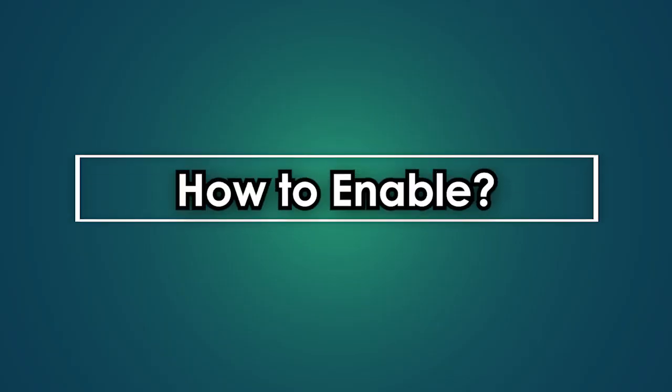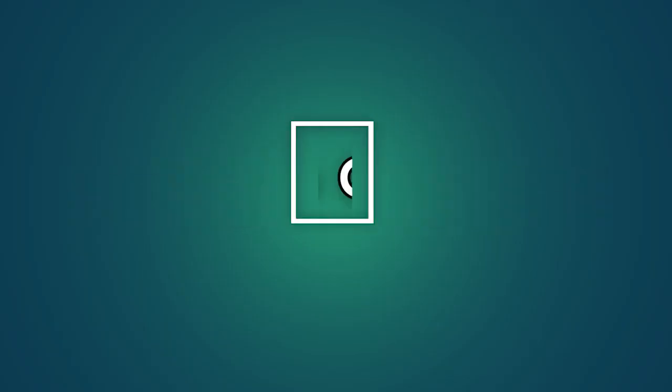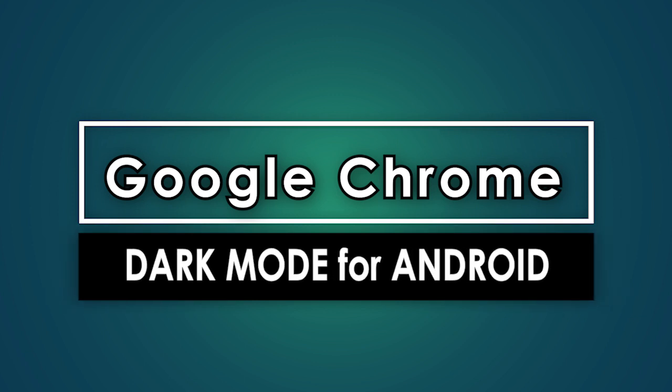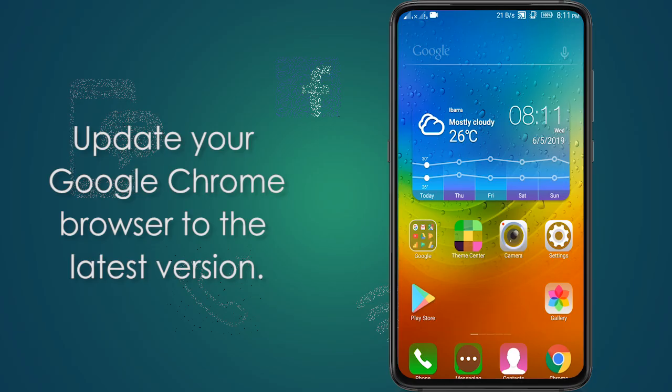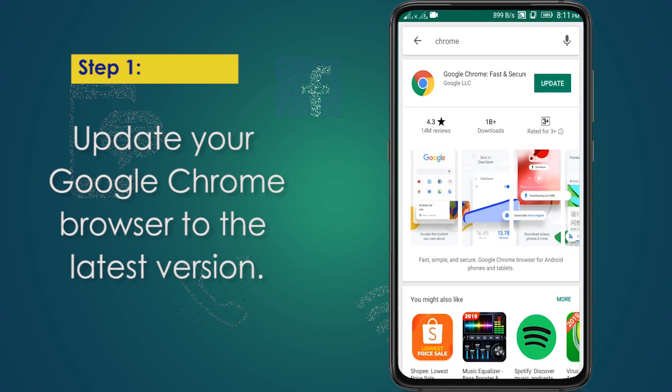Good day guys. I'm going to show you how to enable Google Chrome dark mode for Android. The first thing you need to do is update your Google Chrome browser to the latest version.